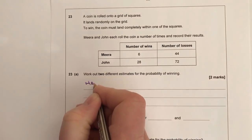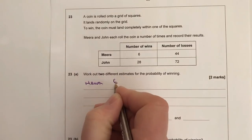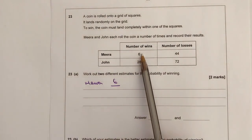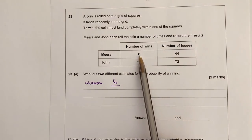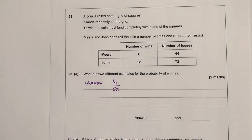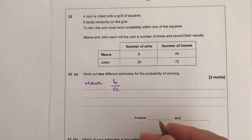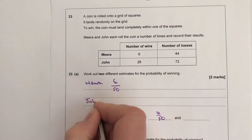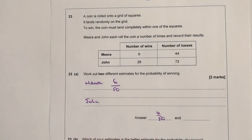Well, let's have a look at Mira. So what does Mira do? Well Mira, she wins 6 rolls out of—now be careful here because she's actually rolled all together 6 plus 44, which is 50 times. So her probability of winning is 6 out of 50. Then look at John. Now don't feel tempted also with these to reduce the fraction and cancel it down. You really don't need to.